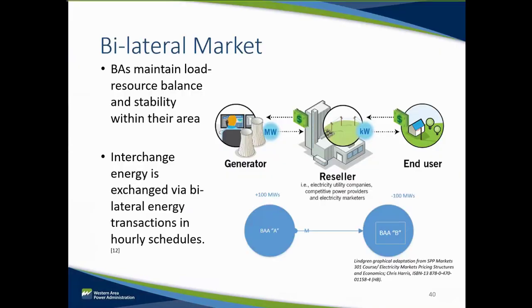The bilateral market is how most of the utilities in the western interconnection have traditionally exchanged energy. This construct is simply the purchasing and selling of energy and transmission between two or more parties. Historically it has been one vertically integrated utility transacting with another, and although this is beginning to change, this is the way that many utilities have operated in the western interconnection for most of their existence.